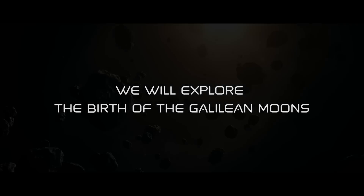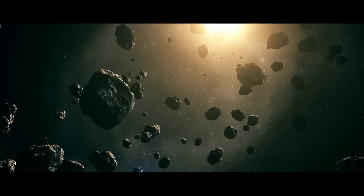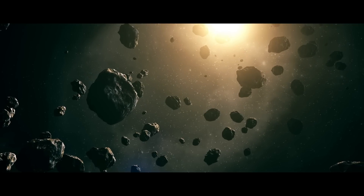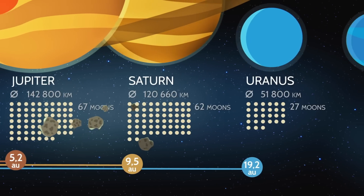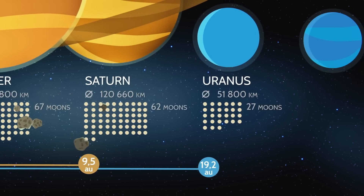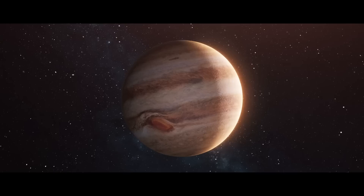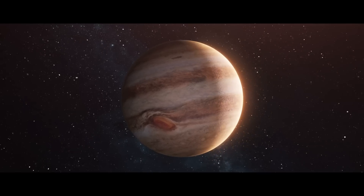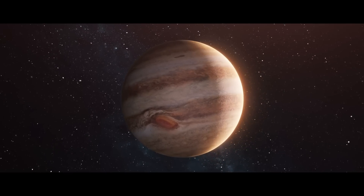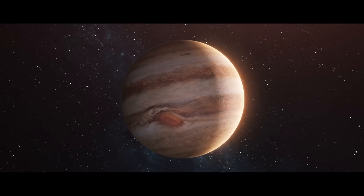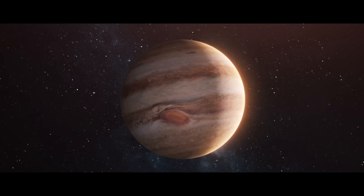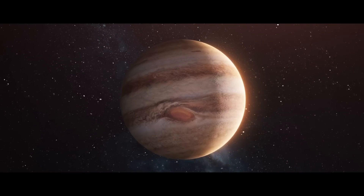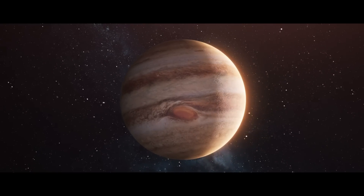We will explore the birth of the Galilean moons, the chaotic creation of the binary asteroid system, and the mechanism for how Uranus and Neptune's instability could have caused some of Jupiter's irregular moons. Get ready to journey through the depths of space and explore the fascinating world of the Jovian system.